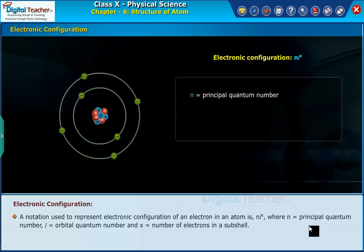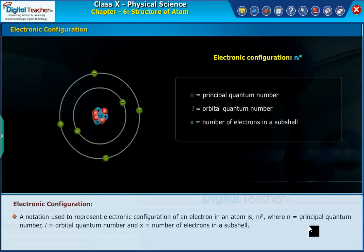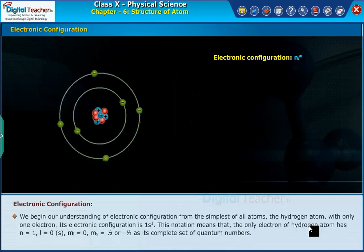Where n is equal to principal quantum number, l is equal to orbital quantum number, and x is equal to number of electrons in a subshell.